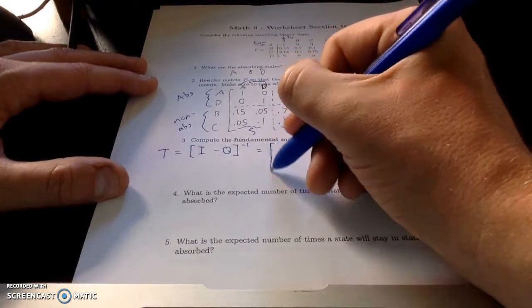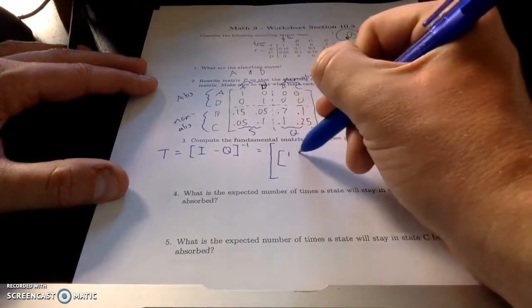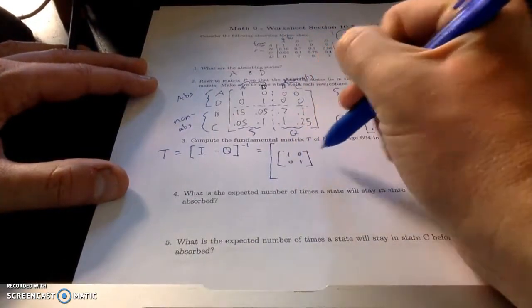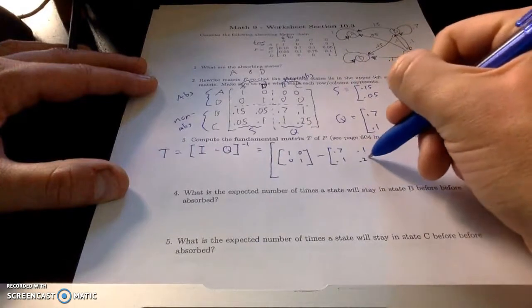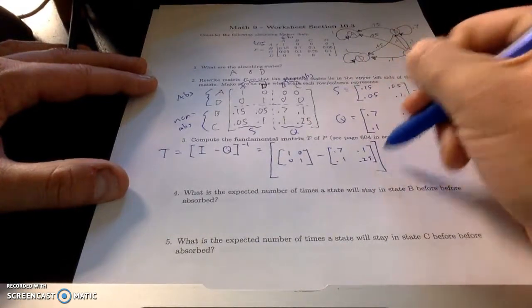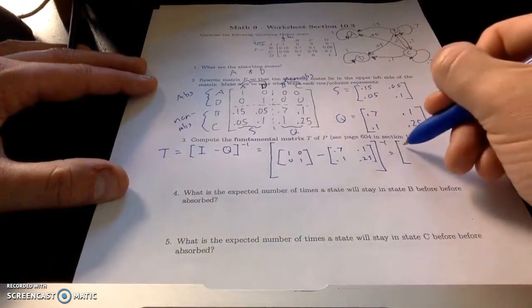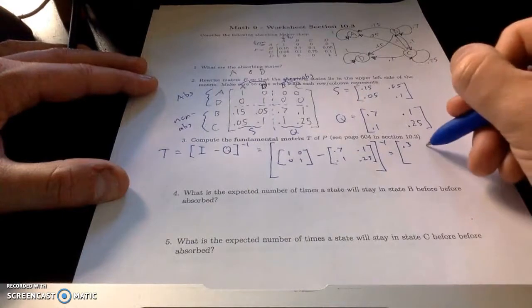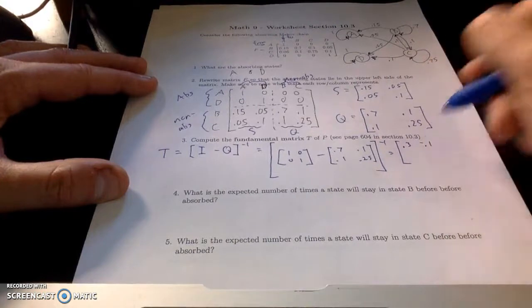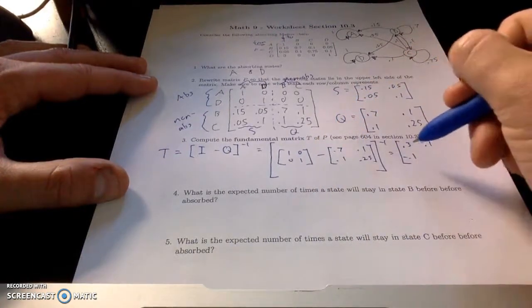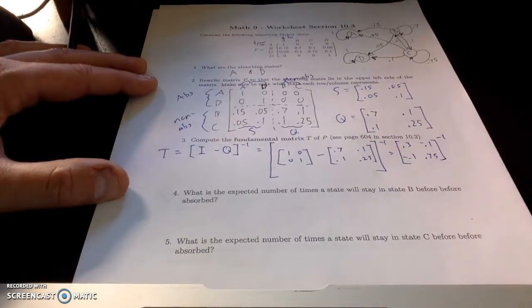Computing it. The identity matrix. And Q is a 2 by 2 matrix. So it's 1, 0, 0, 1, minus Q, 0.7, 0.1, 0.1, 0.25. And take the inverse of that. So 1 minus 0.7 is 0.3. 0 minus 0.1 is negative 0.1. And 1 minus 0.25 is 0.75. And then compute the inverse.